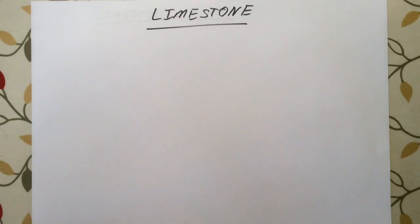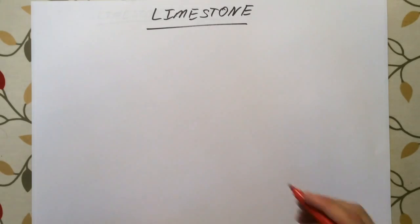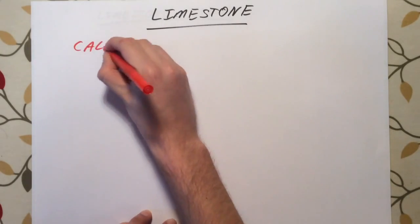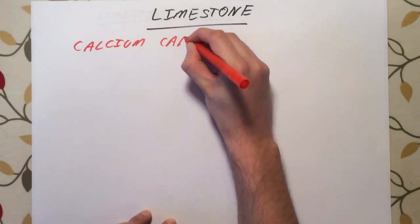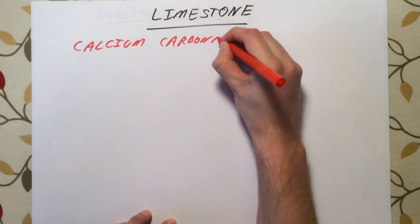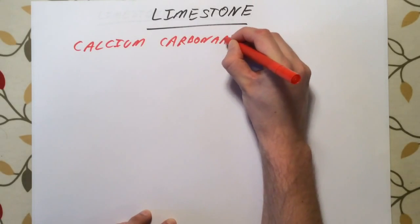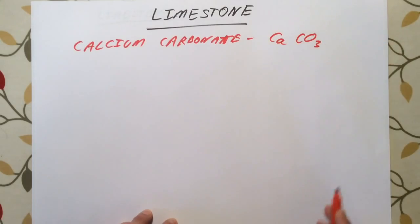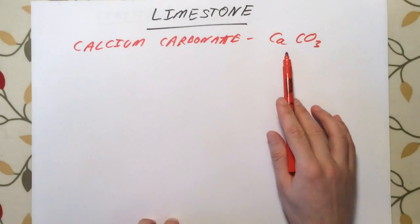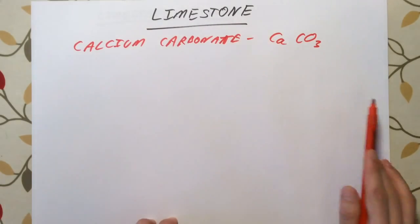This video is focusing on limestone. It comes up in all specifications and the first thing we need to know is that limestone is formed mainly of a mineral which is called calcium carbonate, which has the formula CaCO3. So CaCO3 is the mineral that makes up limestone.